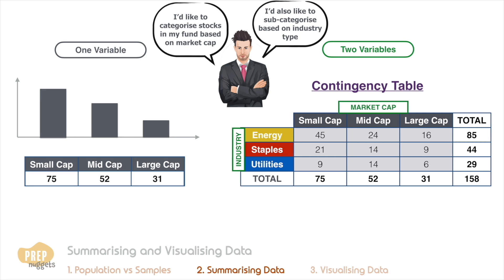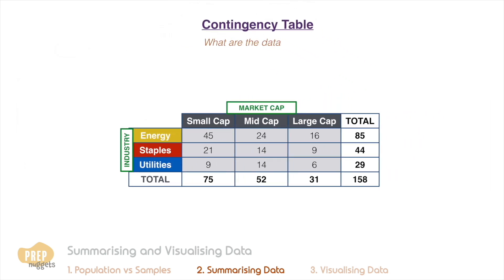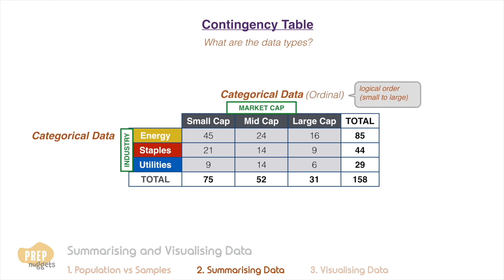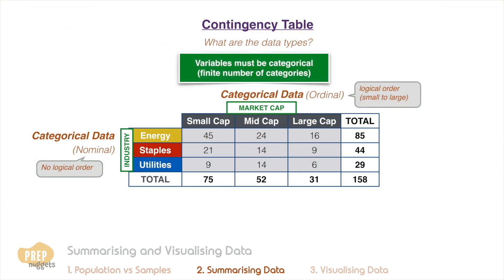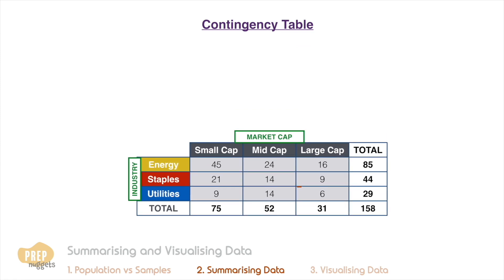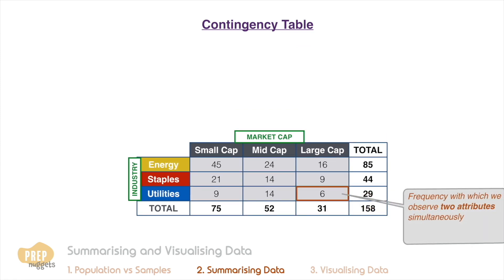Can you identify what type of data we're dealing with in this example? You should identify both as categorical data. Market cap is ordinal data, as there is a logical order of small to large. Industry is nominal, as there is no logical order to it. Note that the variables for contingency tables must be categorical and have a finite number of categories.